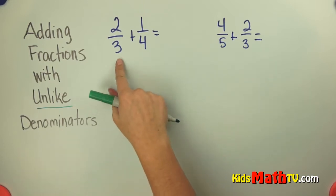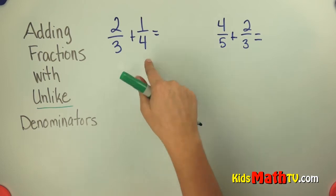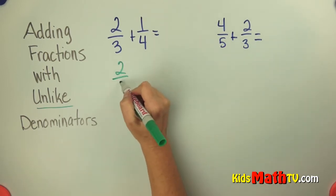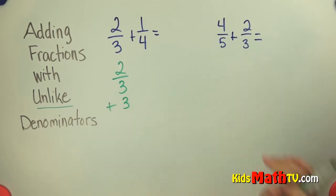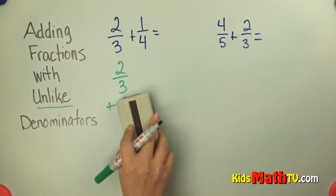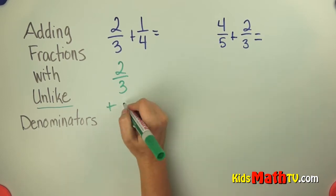So we have this problem 2 thirds plus 1 fourth. I'm going to rewrite it vertically. 2 thirds plus 1 fourth. Make sure you write your problem down correctly or you won't get the right answer.